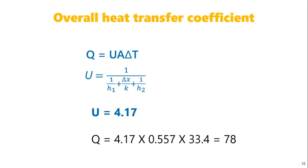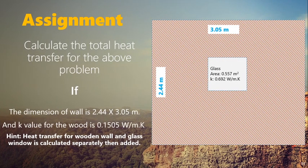For an assignment, you need to solve the same problem including the dimensions of the wooden wall. Calculate the total heat transfer, which equals the sum of heat transfer through the glass (already calculated) plus the heat transfer through the wooden wall. Using the given dimensions, calculate the area of the wooden wall, then add both heat transfers to get the total heat transfer across the room.